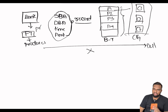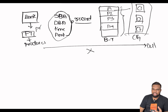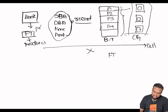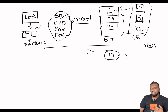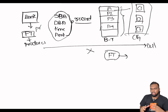Each partition has a leader broker and multiple followers. The leader takes charge of handling reads and writes, while followers replicate the data for fault tolerance. If a leader fails, a follower steps in to maintain a smooth flow of data — fault tolerance is one of the most important aspects of the Kafka ecosystem.